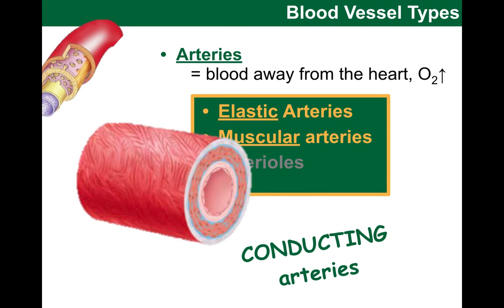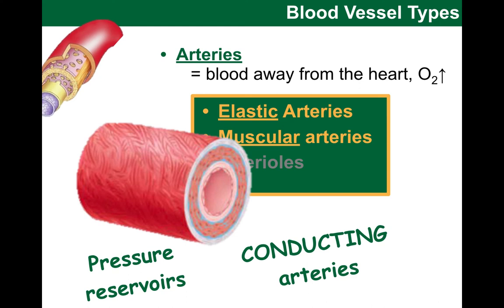A good example of this type of artery would be our aorta and its first initial branches from the aortic arch. When we look at the wall structure of these vessels, they are characterized by having a lot of elastin in the wall, and there is little to no vasoconstriction happening here. Instead they expand and recoil in response to the pulsatile high-pressure blood flowing out, so they can be considered as pressure reservoirs of the vasculature.